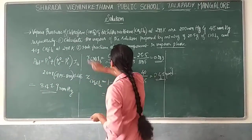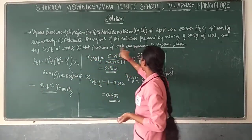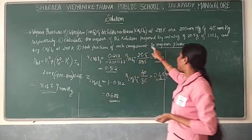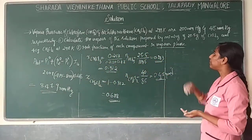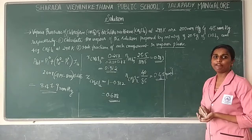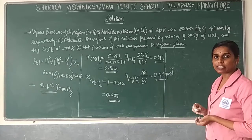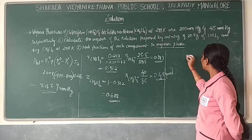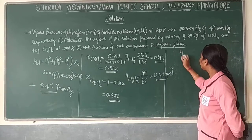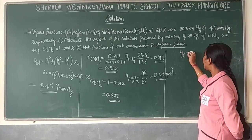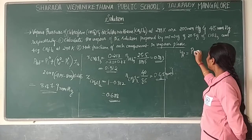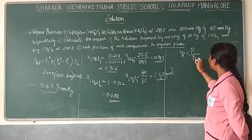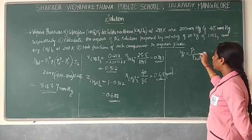For the next question — mole fraction of each component in the vapor phase — the formula is: y_i = p_i divided by P_total, where y_i is the mole fraction of component i in the vapor phase, p_i is its partial vapor pressure, and P_total is the total vapor pressure.